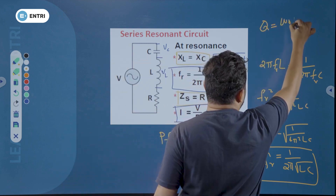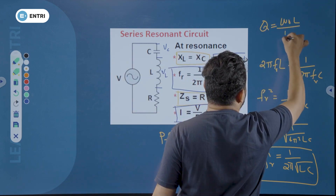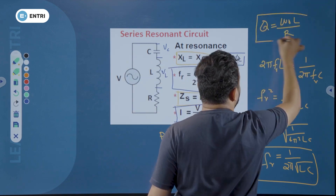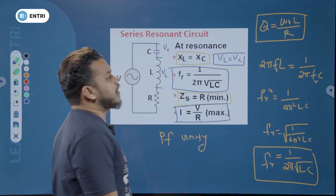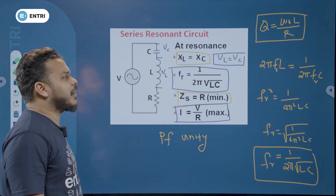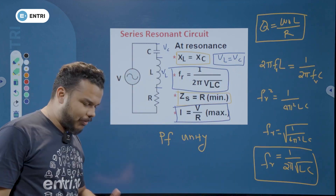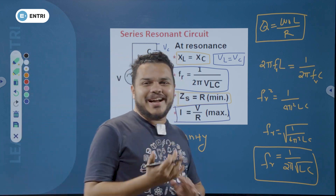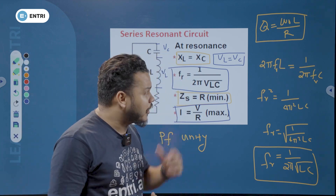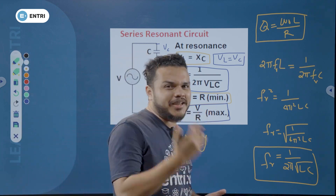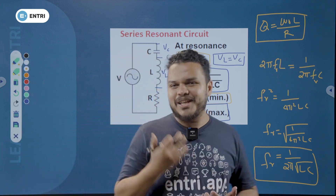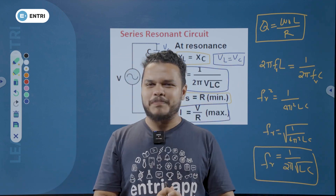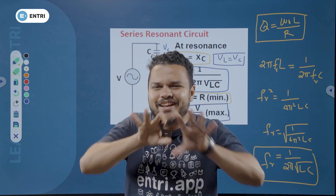The quality factor equation is omega zero L divided by R. Quality factor depends on bandwidth and is inversely proportional to it.